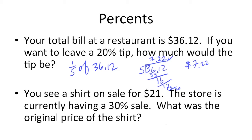So next up, we have a shirt on sale for $21. The store is currently having a 30% sale. What's the original price of the shirt? So this is a question where we kind of have to think backwards, right? We know the final price, we need to find the original price. So if we know that the store is having a 30% sale, we know that that's the equivalent of 0.3 or 0.30.